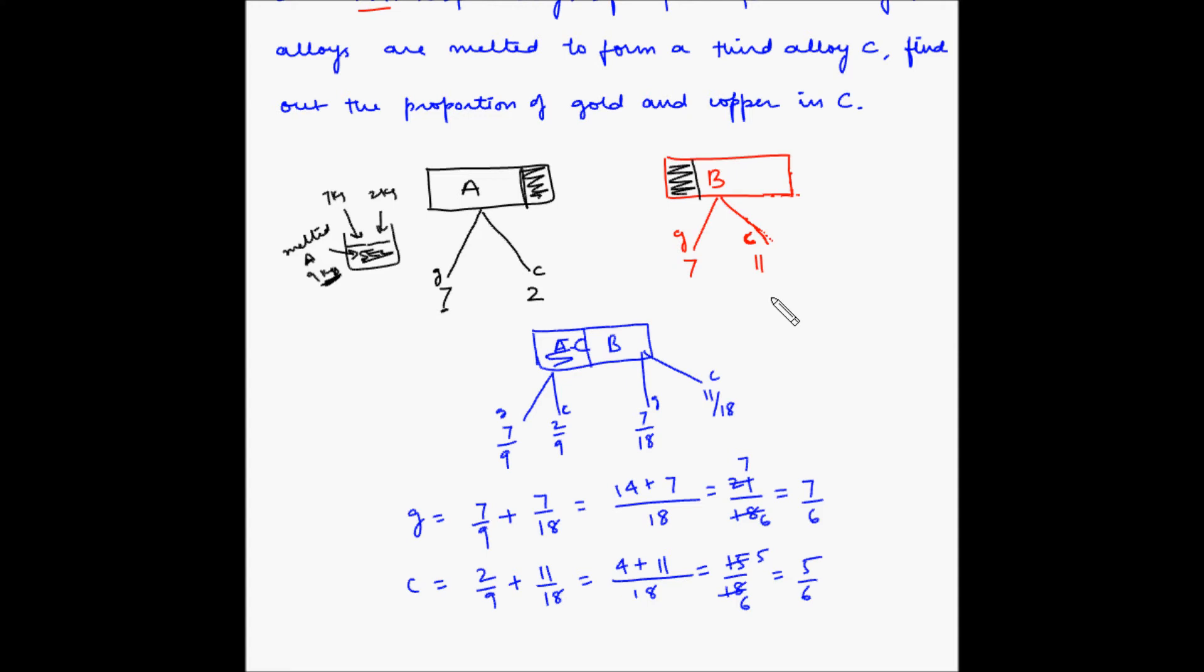The ratio of gold to copper is equal to 7 by 6 divided by 5 by 6. 6 and 6 gets cancelled. So this is 7 by 5.